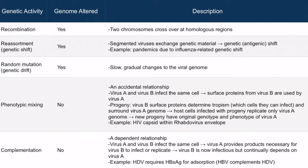Now let's discuss reassortment, or genetic shift. This occurs when segmented viruses exchange genetic material. When segments reassort themselves, a new, more virulent virus can form. This is considered a shift in the genetics or antigens — hence the term genetic shift.